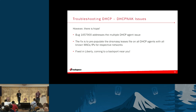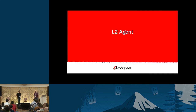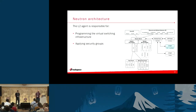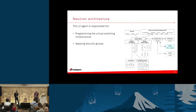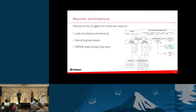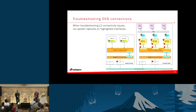Let's talk about some L2 agent issues. The L2 agent is responsible for programming the virtual switching infrastructure and also applying security group rules to Neutron ports. A failure of the L2 agent can result in a lack of instance connectivity, security group issues, and an immediate error state during a nova boot. When troubleshooting L2 connectivity issues, in an OVS environment with one compute node and one network node, the interfaces marked with stars are where you'll want to run your packet captures to make sure traffic is making it through.